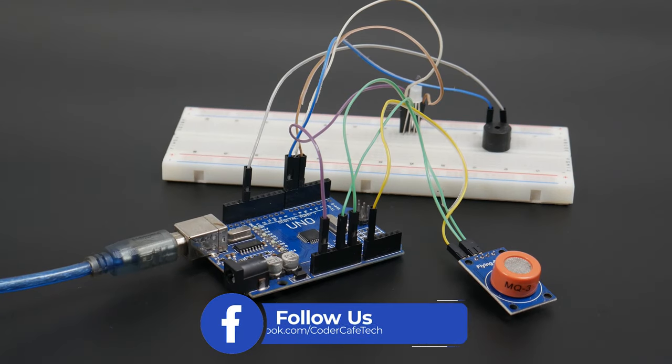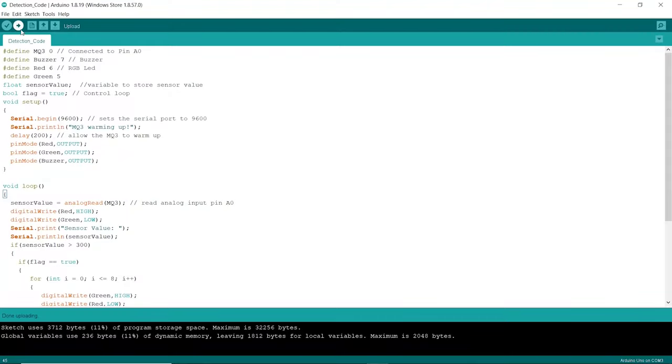Now let's upload the code in the Arduino and start testing. We have already measured the threshold value indicating the presence of alcohol and we have already plugged them in the code.